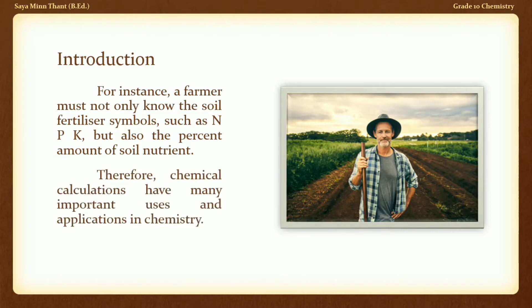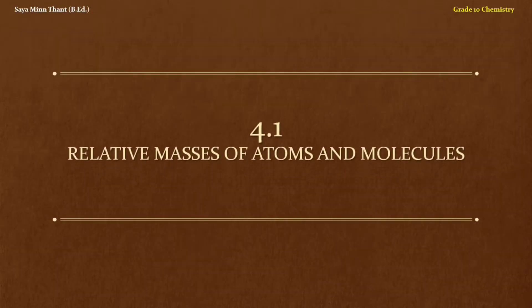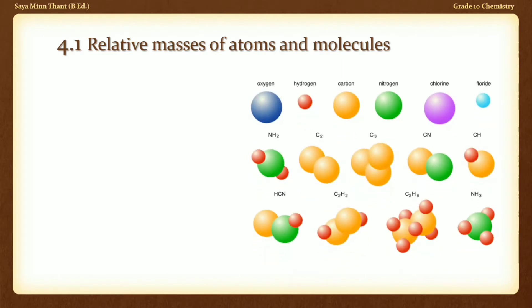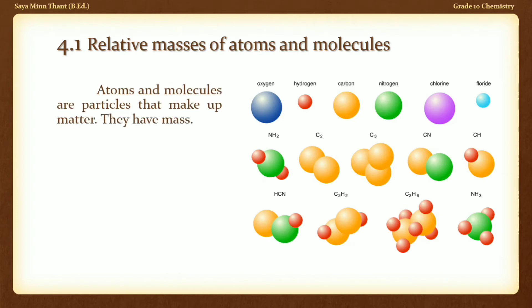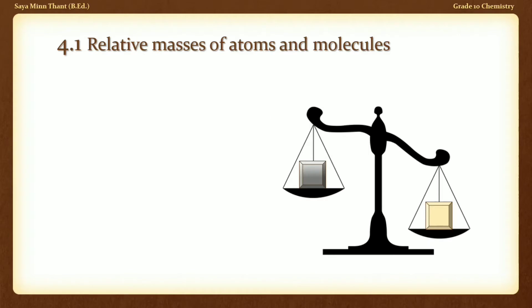Relative Masses of Atoms and Molecules. An atom or molecule has a very small size — on the order of 10 to 30 degrees, and molecules are around 12 to 13 degrees. There are molecules on the order of 10 to 15 centimeters in scale.